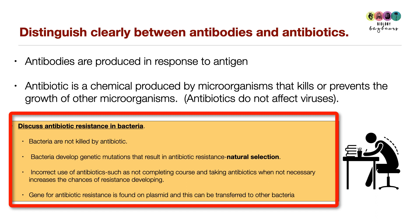It is also important to discuss antibiotic resistance in bacteria — when bacteria are not killed by an antibiotic. Bacteria develop genetic mutations that confer resistance, linked to natural selection. Incorrect antibiotic use — such as not completing the course or taking antibiotics unnecessarily (e.g. for a viral flu) — increases the chances of resistance developing. The gene for antibiotic resistance is found on a plasmid and can be transferred to other bacteria.